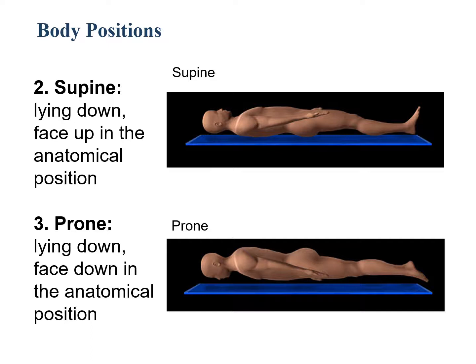The next two positions are supine and prone. The supine position means lying horizontally with the face and torso facing up, as opposed to the prone position which means that the specimen is lying down with the face and torso facing down in the anatomical position. An easy way to remember supine and prone is: supine has 'up' in it, that means the face and the torso are facing up.